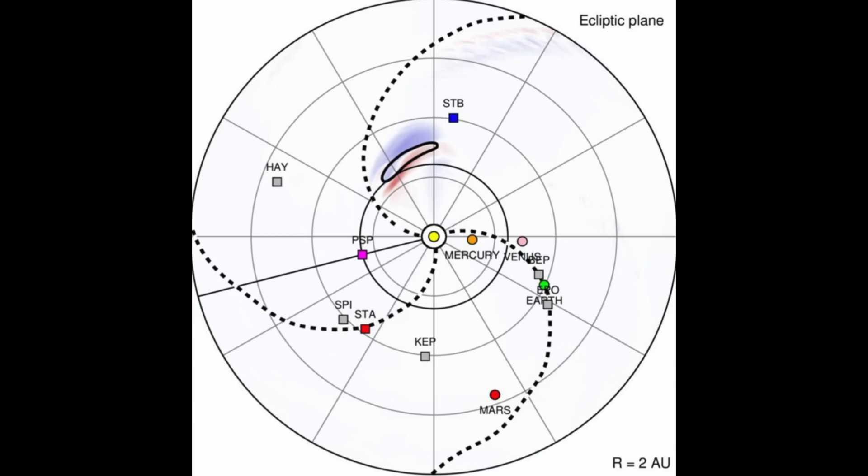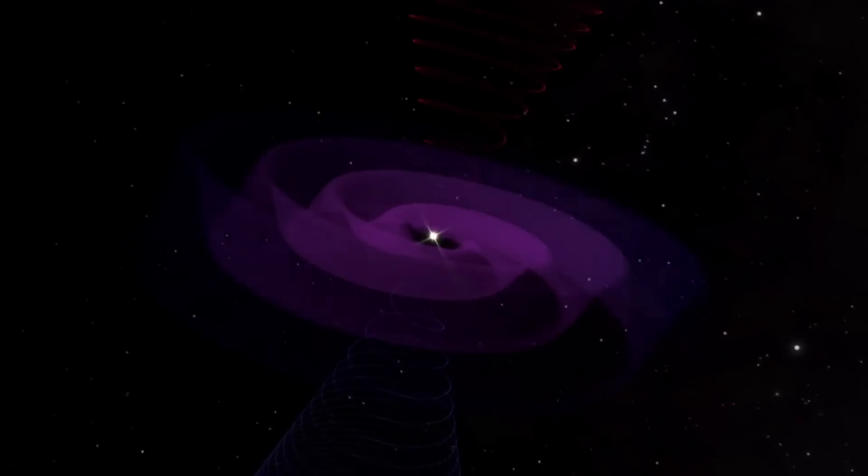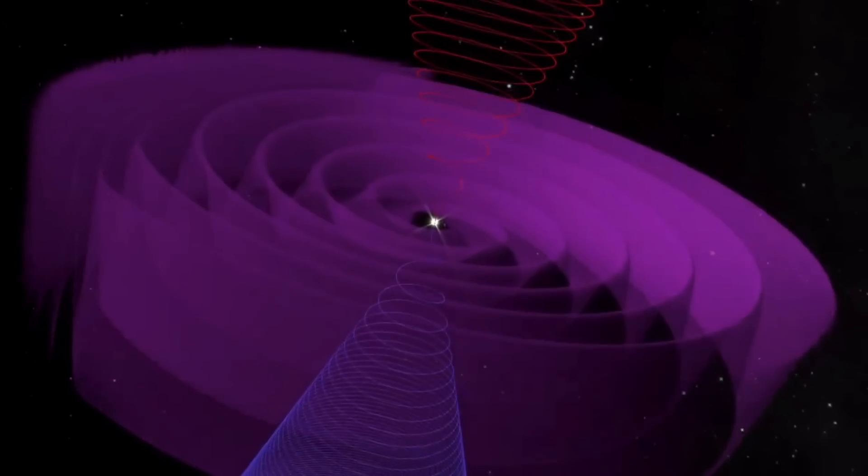This is a component of every spinning magnetic system, the polar fields coiling north and south, then wrapping around the entire system, but then the central wavy current sheet as well that contains the equatorial fields.